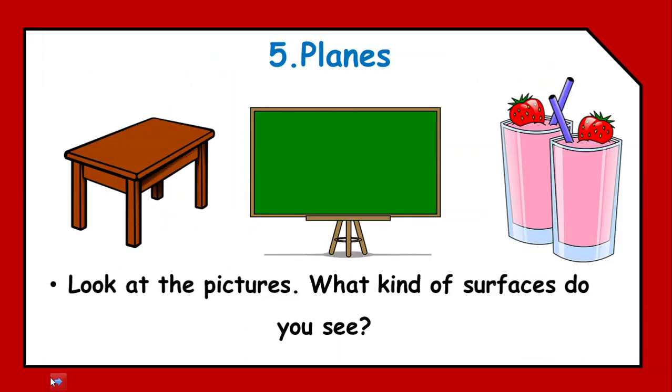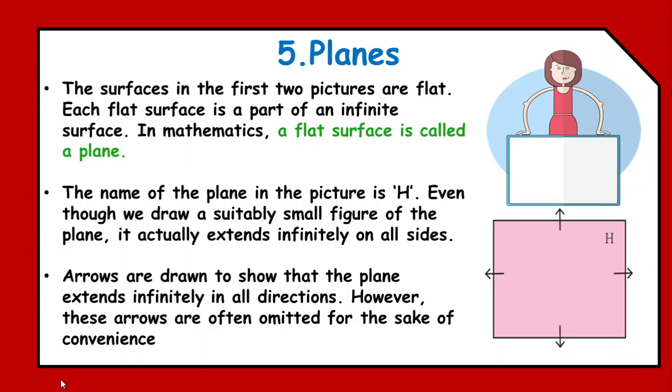Now, the next concept is planes. Just look at these pictures. What kind of surfaces do you see if I talk about the table and the board? They are having flat surfaces. Whereas, whenever I am trying to touch a glass, I will be able to recognize the curved surfaces. In the first two pictures or in the first two objects, we are having flat surfaces. So, in mathematics, this flat surfaces are called as a plane.